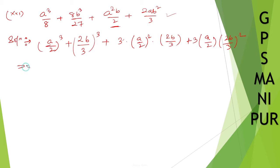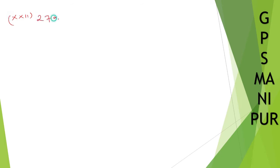So I can write this down as (a/2 + 2b/3) whole cube. This is the formula for (a + b) whole cube. That's all. Let us do the next question. Roman number 22: 27x cube plus 9x squared plus x plus 1 by 27.